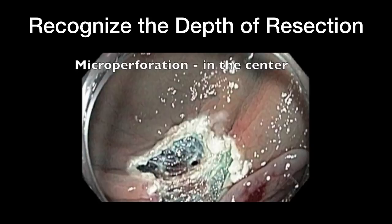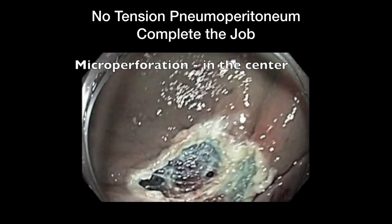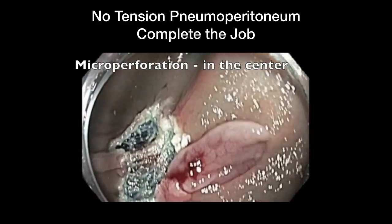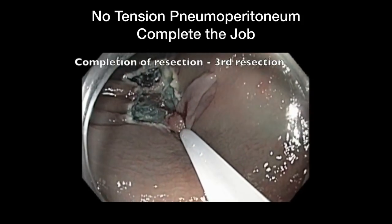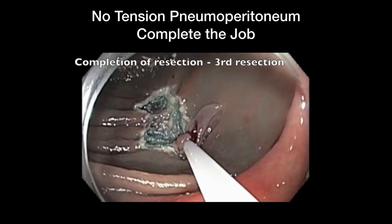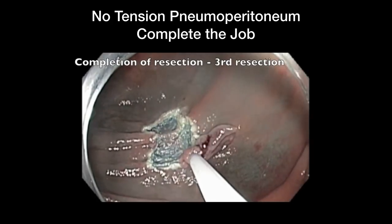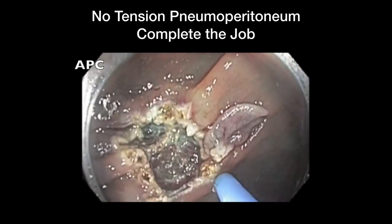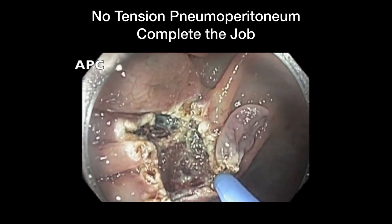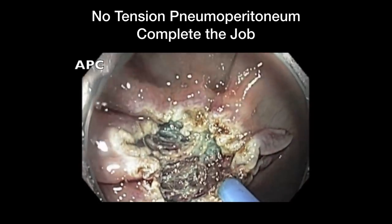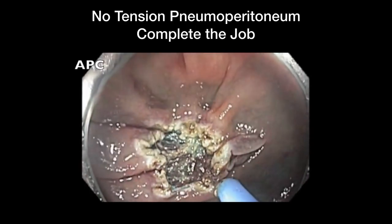Once you find that there is a perforation, the next step is to make sure the patient has no tension pneumoperitoneum. If that happens, you stop the procedure, do not pull the scope out, decompress the abdomen with a large-bore angiocath, and then come back and close the perforation. In this patient, there was no tension pneumoperitoneum. We noticed there was a little more polyp tissue left at the lower edge, went ahead and did the resection quickly, then ablated the edge with APC to prevent local recurrence. As long as there is no tension pneumoperitoneum, you can go ahead and take care of the polyp until it is completely resected.